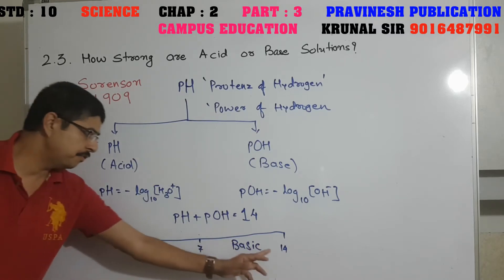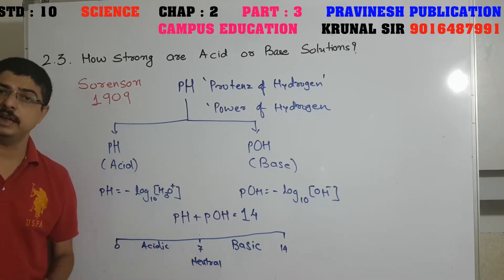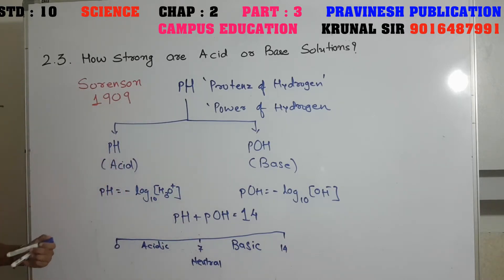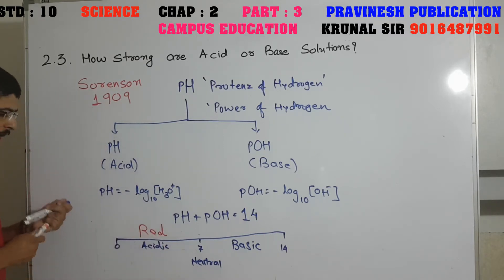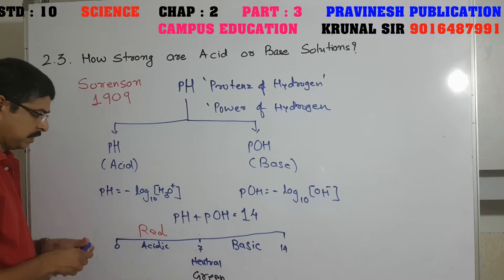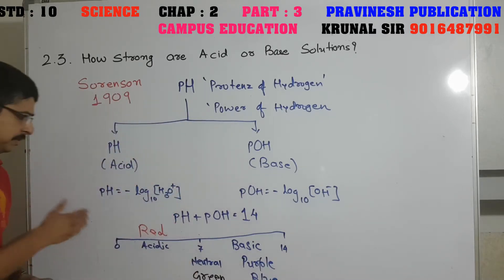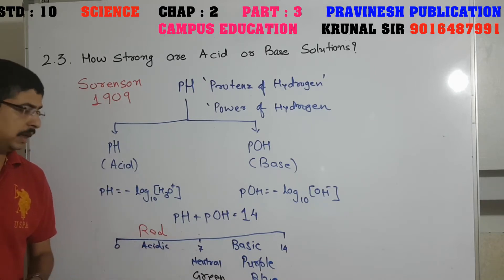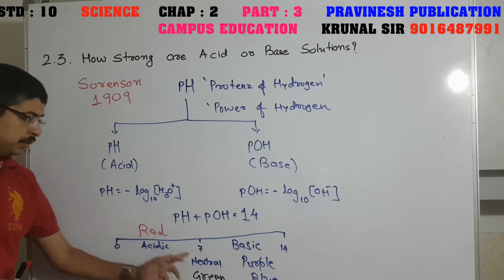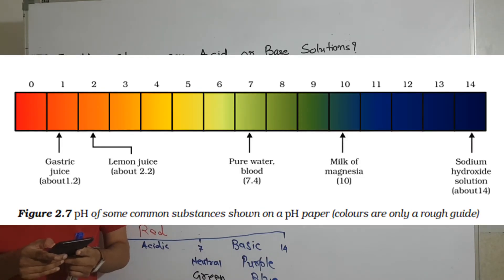The pH scale ranges from 0 to 14. If the pH value of a solution is between 0 to 7, it is acidic. If it is around 7, it is neutral. If it is between 7 to 14, it is basic. When we add universal indicator to an acidic solution it gives red color, neutral gives green color, and basic gives purple-blue color. These colors are only produced by the universal indicator — the solution itself does not have this color.